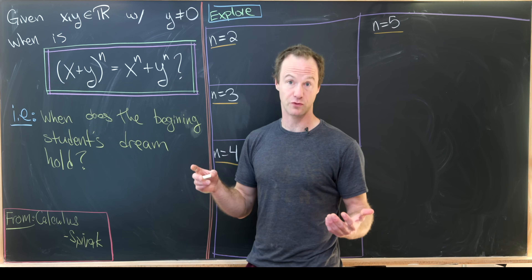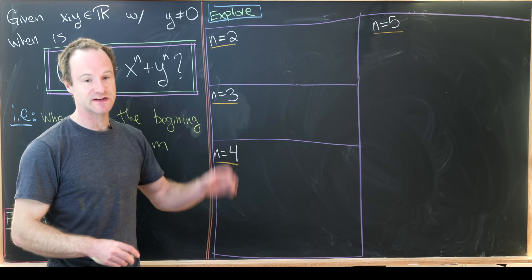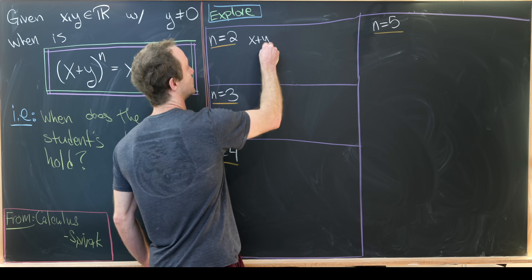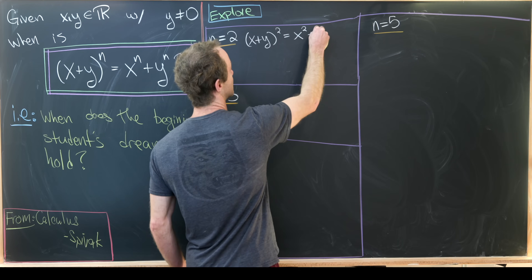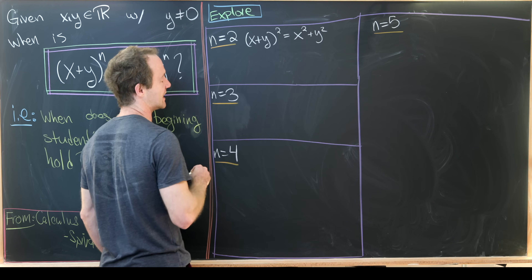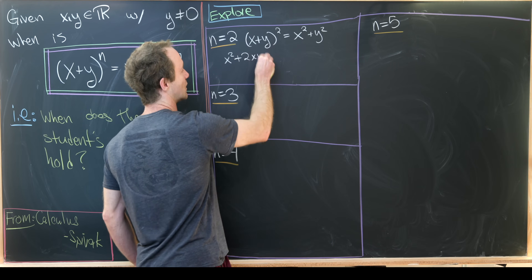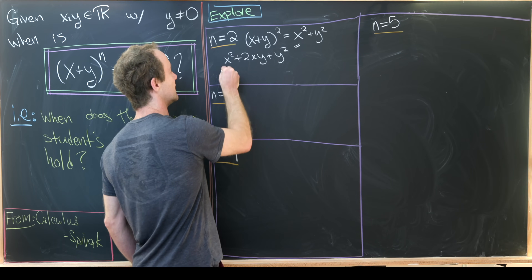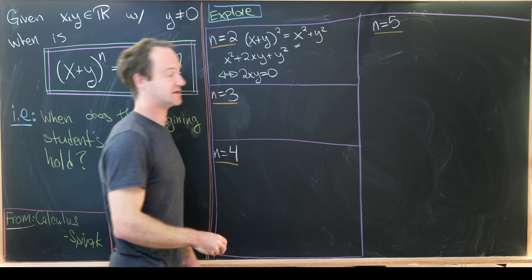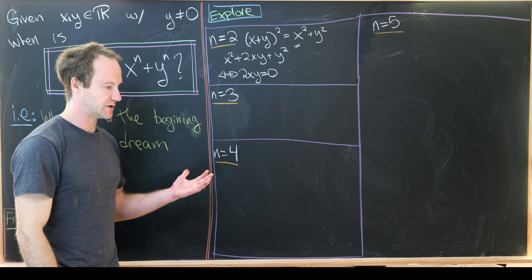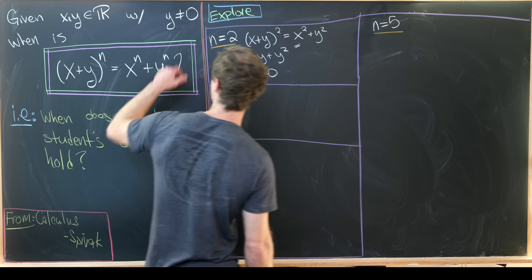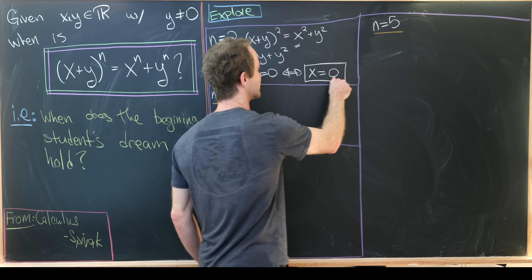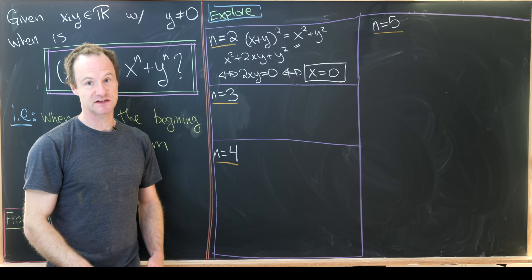Before we prove our result, let's do a little data collection by working out some examples, starting with n equals two. We need (x + y)² to equal x² + y². Multiplying out the left side gives x² + 2xy + y², which equals x² + y² if and only if 2xy = 0. Since two is not zero and y is not zero, we get x = 0 as our condition for the n = 2 case.